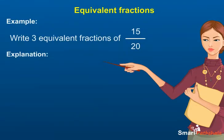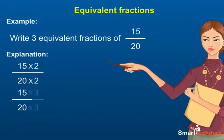Explanation: we can get three equivalent fractions by multiplying the numerator that is 15 and denominator that is 20 by 2, 3 and 4.